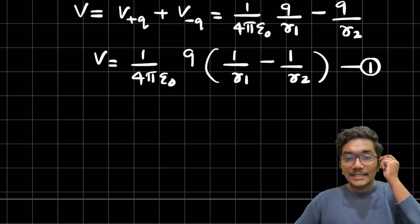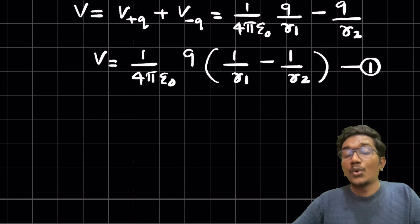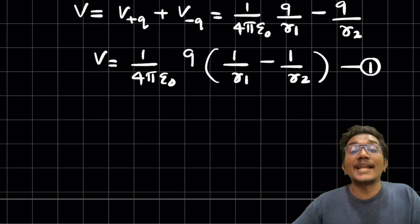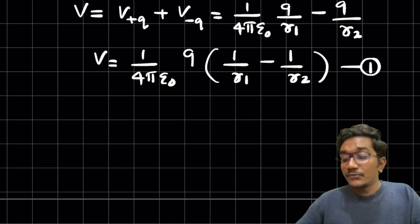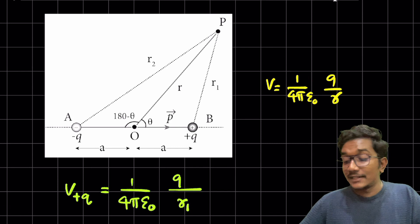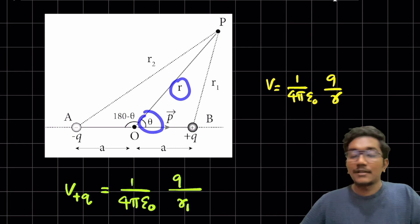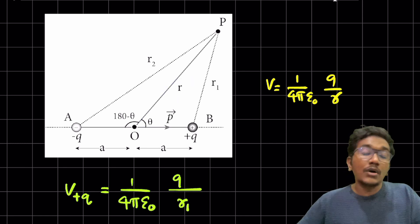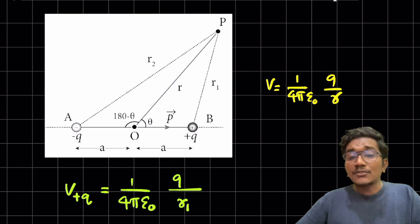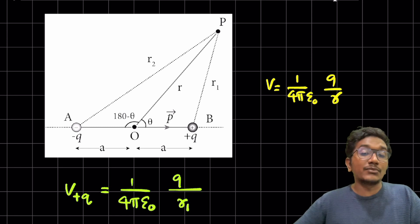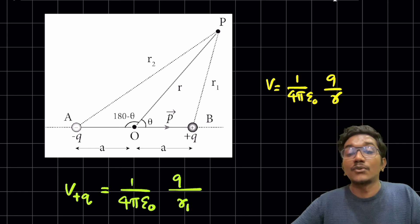Now, r1 and r2 are two random values. We want to convert r1 and r2 into the identity of point P, which is defined by r and theta. So we need to convert r1 and r2 into r and theta. For that, we are going to use the cosine rule, which those who studied maths will know well.